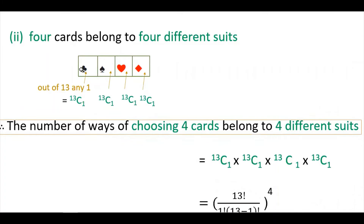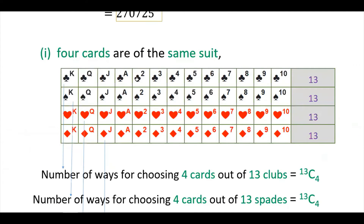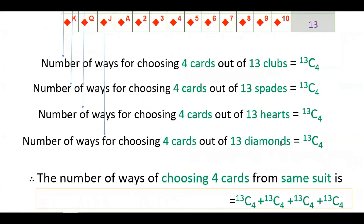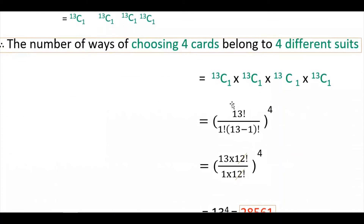The number of ways is 13C1 into 13C1 into 13C1 into 13C1, because from each of the 4 suits you choose any one card. We multiply because for any card chosen from one suit, you can independently choose any of the 13 cards from the next suit. So the total is 13C1 to the power of 4.